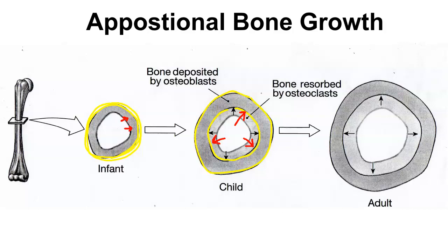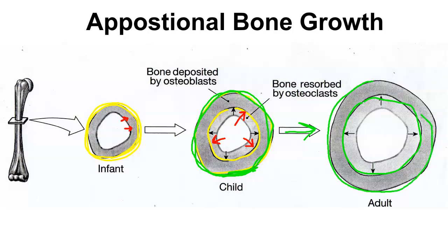The same process will continue to occur during childhood. Osteoblasts are going to lay down new osteoid on the periosteal surface — we're going to grow new bone on the periosteal surface. Looking at this picture, the child's bone outer periphery was here, but so much osteoid was laid down on the outer periphery that the new width of the bone is out here. At the same time, osteoclasts degrade away bone from the endosteal surface, making the medullary cavity bigger. That's the basic premise of appositional bone growth.